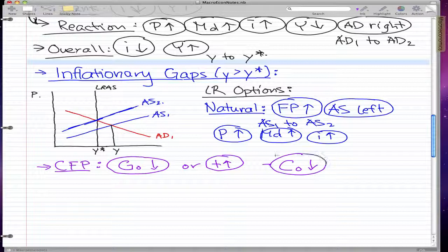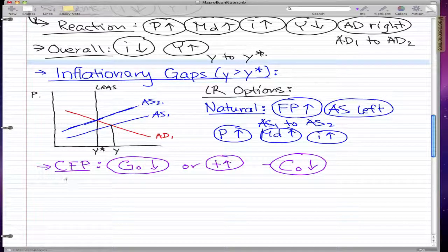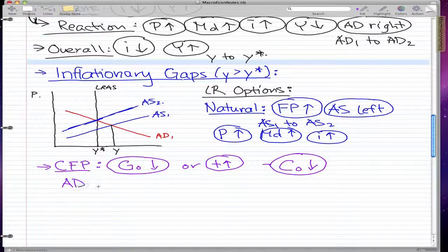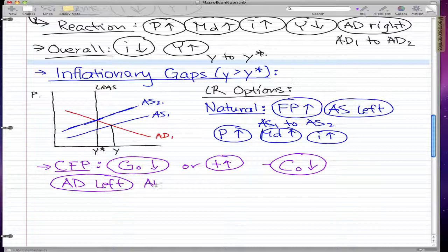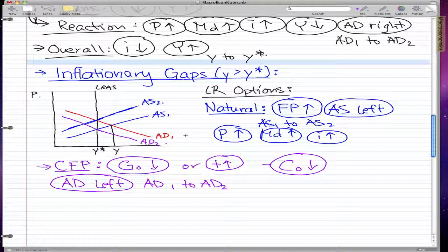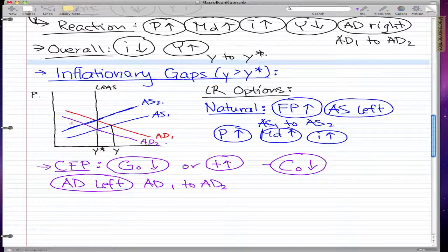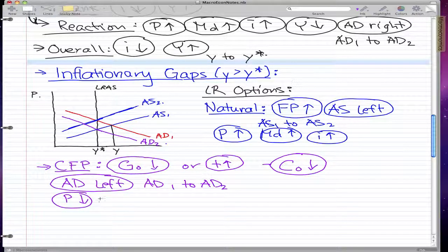What we really want to know though is that the aggregate demand moves left, AD1 to AD2. So let's just reflect this in our graph, AD2. Okay, so we can see already that price fell, so let's just write that down.